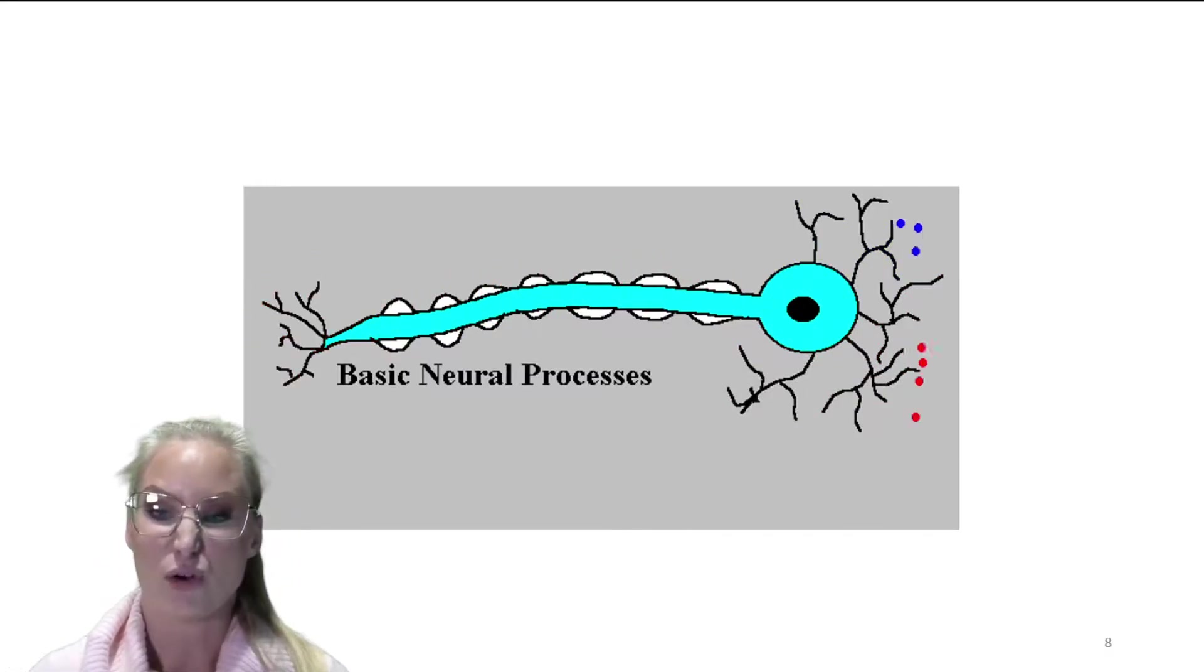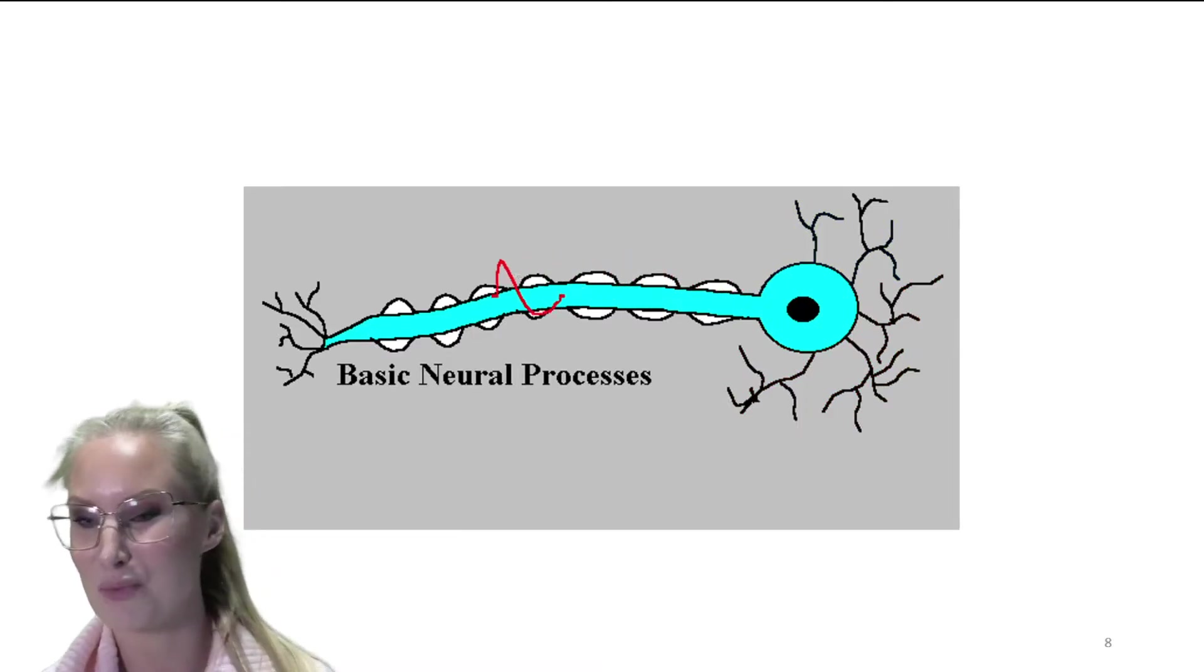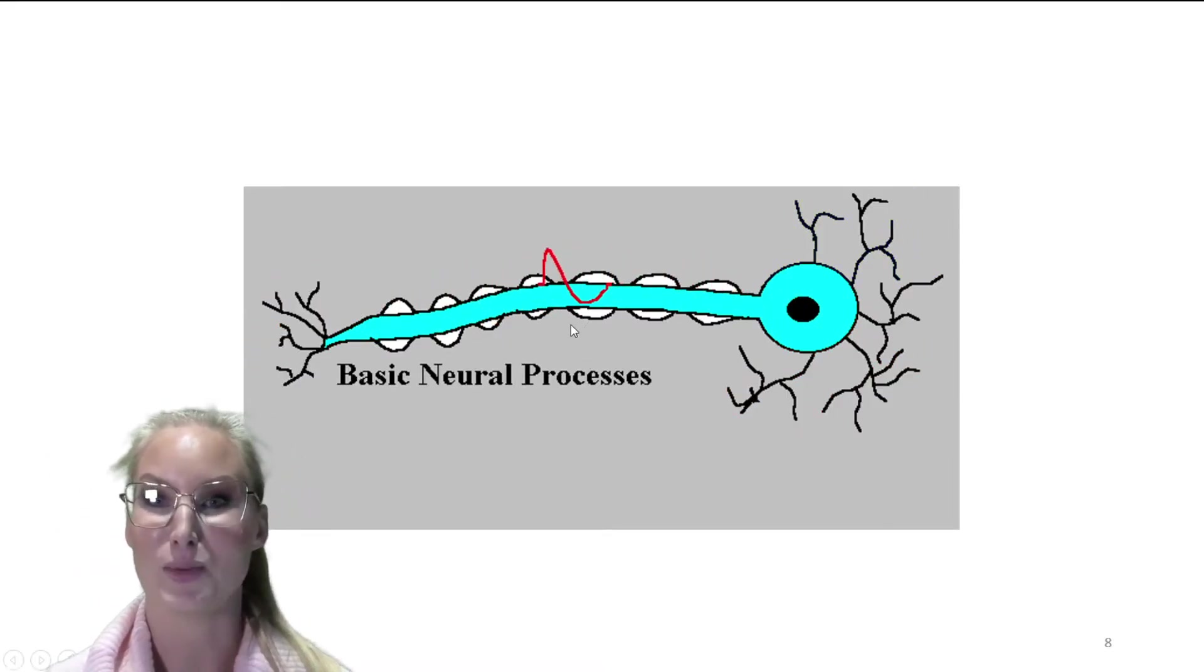So basically every time a neuron is being activated, it's producing electricity. In fact, our bodies produce enough electricity to light up a light bulb. So they're pretty busy. So this is your summary of the anatomy of a neuron. And we'll talk again soon.